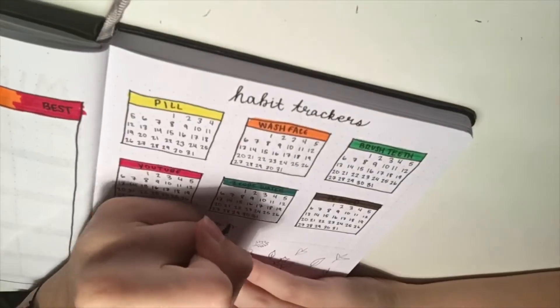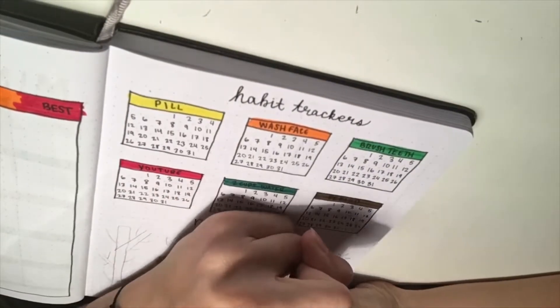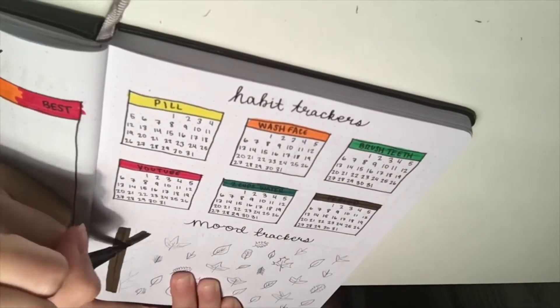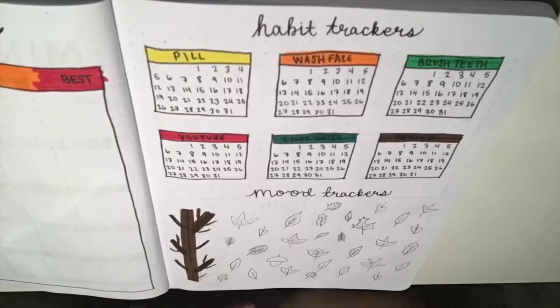Moving down to my mood tracker, I drew a leafless tree with 31 leaves falling off of it. Each leaf will represent a day and I'll color it in based on my mood.